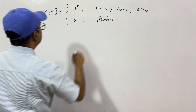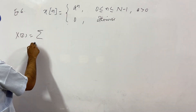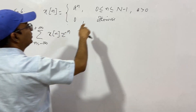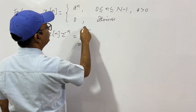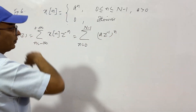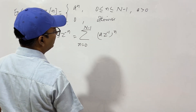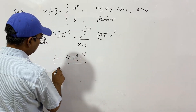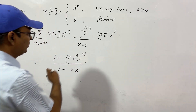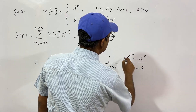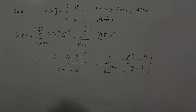Sixth example: X(n) = a^n for n = 0 to N-1, and 0 otherwise. The Z-transform reduces to a finite sum from n=0 to N-1 of (a*Z^(-1))^n. Evaluating this finite geometric progression gives X(z) = (Z^N - a^N) / (Z^(N-1) * (Z - a)).